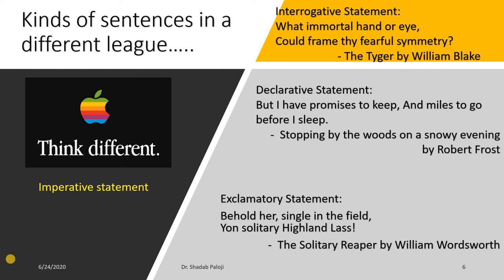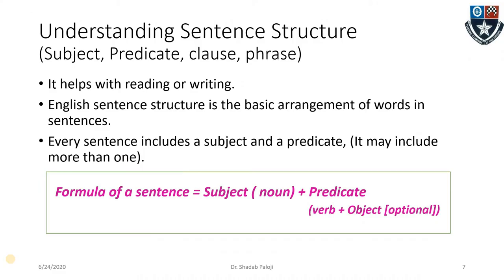Then exclamatory — this is from 'The Solitary Reaper' by William Wordsworth: 'Behold her single in the field, yon solitary highland lass!' The poet is so filled with enchantment, so happy to see someone so beautiful, so different from the normal, managing things alone — such a strong woman — and therefore he cannot keep his emotions in himself. This is how it comes out with an exclamation mark, making it an exclamatory sentence.